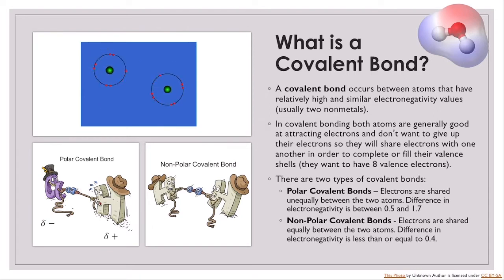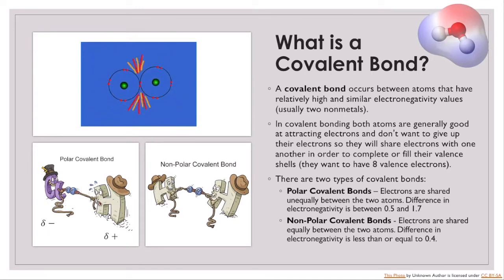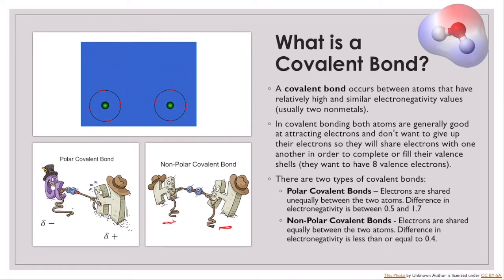There are two types of covalent bonds: polar covalent bonds and non-polar. In non-polar covalent bonds, the electrons are going to be shared pretty equally between the two atoms because the atoms involved either have identical electronegativities or very similar electronegativities — the difference is going to be equal to or less than 0.4. A good example here would be two hydrogen atoms sharing those electrons pretty equally, with an equal tug on that electron pair.